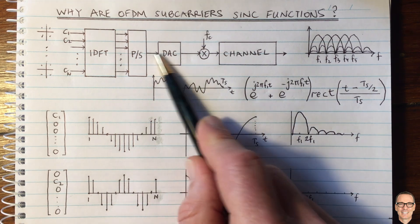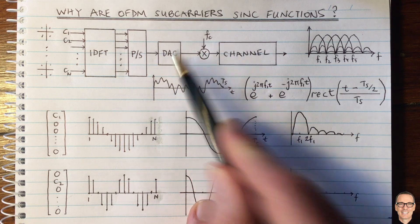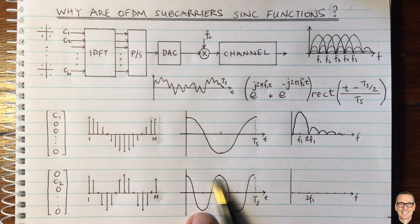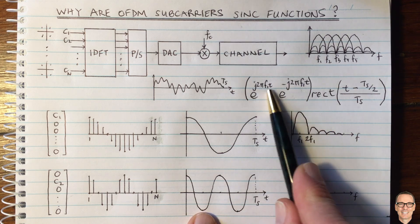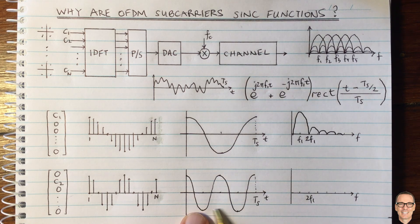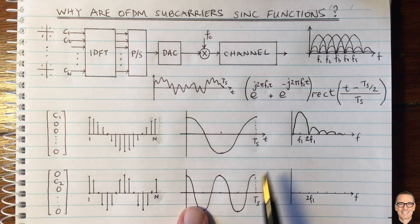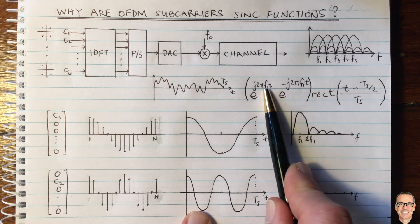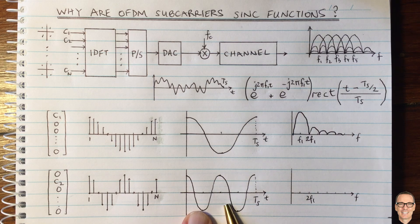When we convert that into the continuous time through the digital-to-analog converter, we're going to get this waveform here. This is a cosine waveform at twice F1. So the equation for this will still be a rect function multiplying a cosine, but now at 2F1, whereas before we had 1F1.